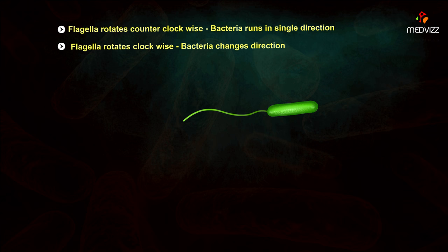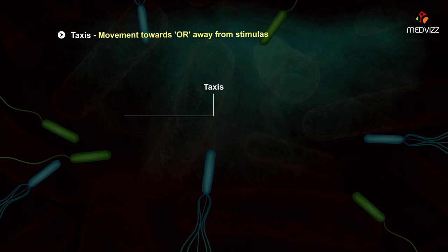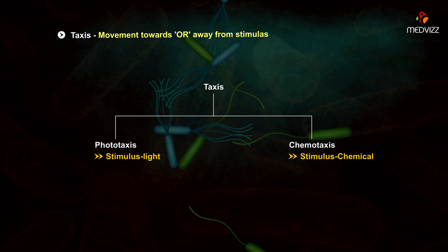Movement toward or away from a stimulus is called taxis. The stimulus can be light in the case of phototaxis or a chemical in the case of chemotaxis.